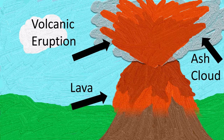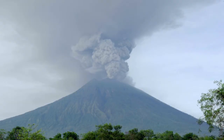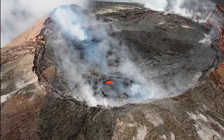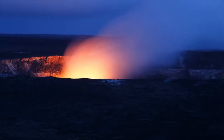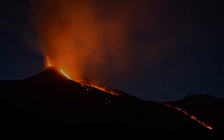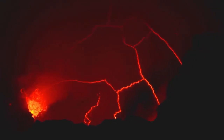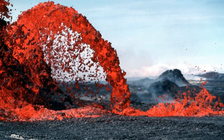Once the magma leaves the volcano, it is called lava. Here is an actual video of an ash cloud. Ash can remain in the air for days and travel hundreds of miles. Look at the magma inside the volcano's crater. Remember, once it starts flowing outside the volcano, it becomes lava. Lava can flow for long distances. Sometimes the lava falls into the ocean where it turns back to rock.